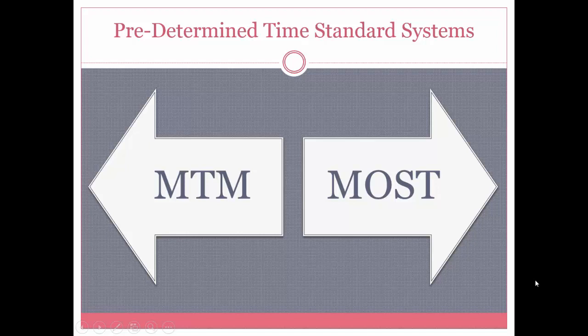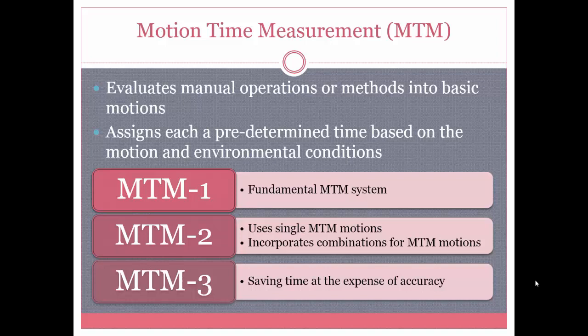Now we're going to talk about predetermined time standards. The two main time standards we're going to discuss are MTM and MOST. MTM stands for Motion Time Measurement, and this is the most basic of the time systems and is most widely used in business. This system evaluates manual operations or methods by the basic motion and assigns a predetermined time based on motion and environmental conditions. The difference between this and MOST is that MTM looks at each individual task within a sequence but doesn't care about the actual sequence — it just cares about the basic tasks.